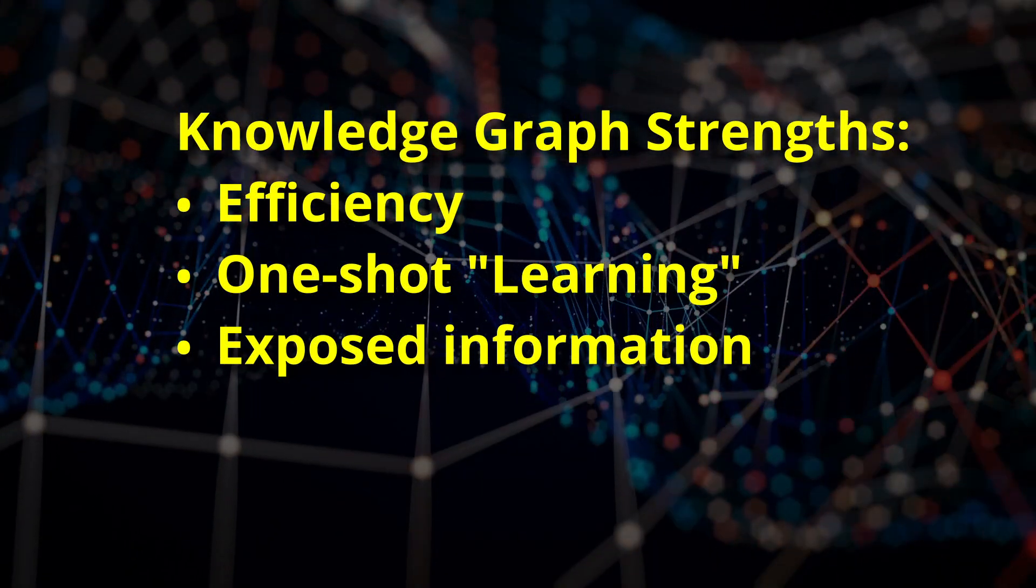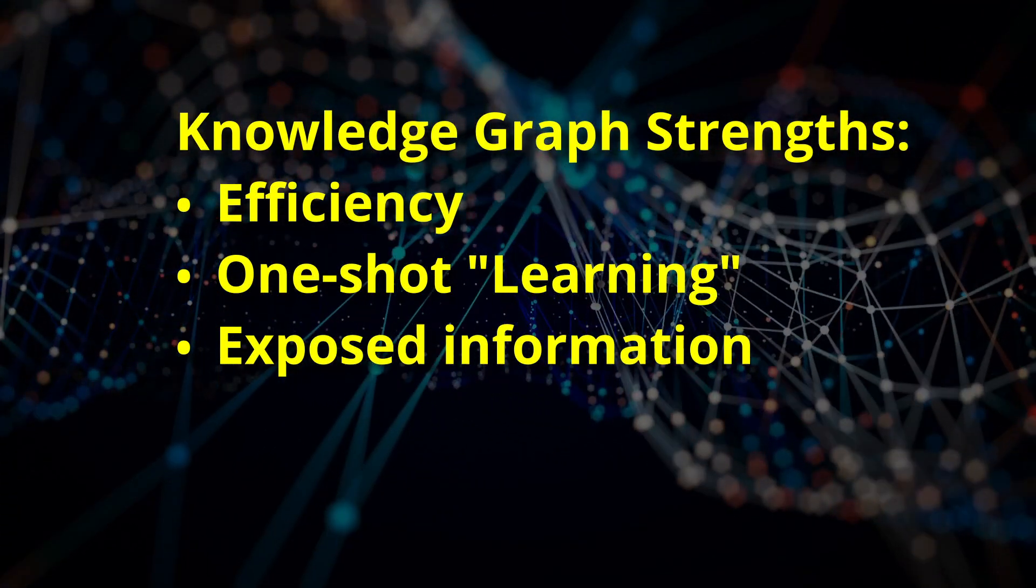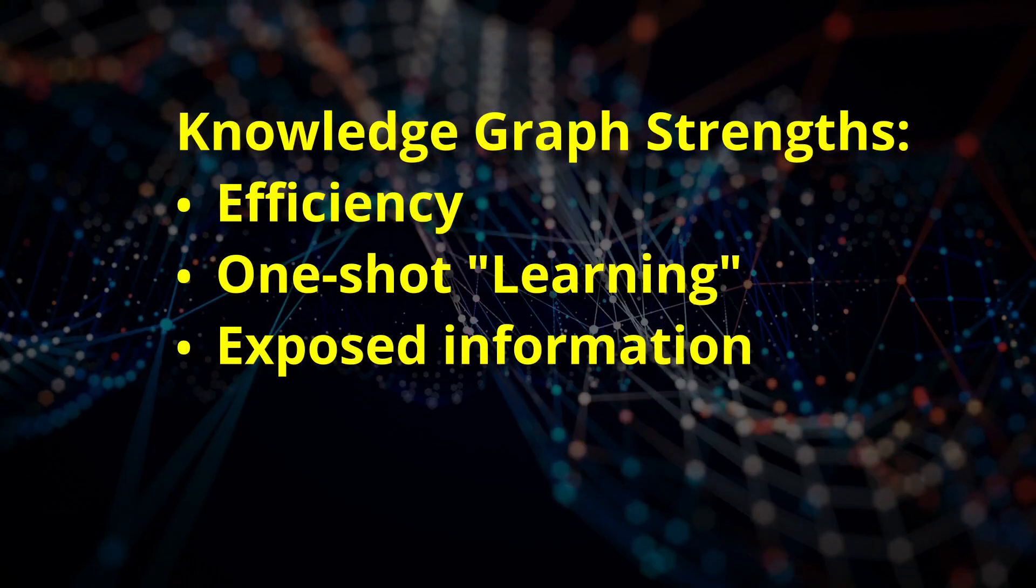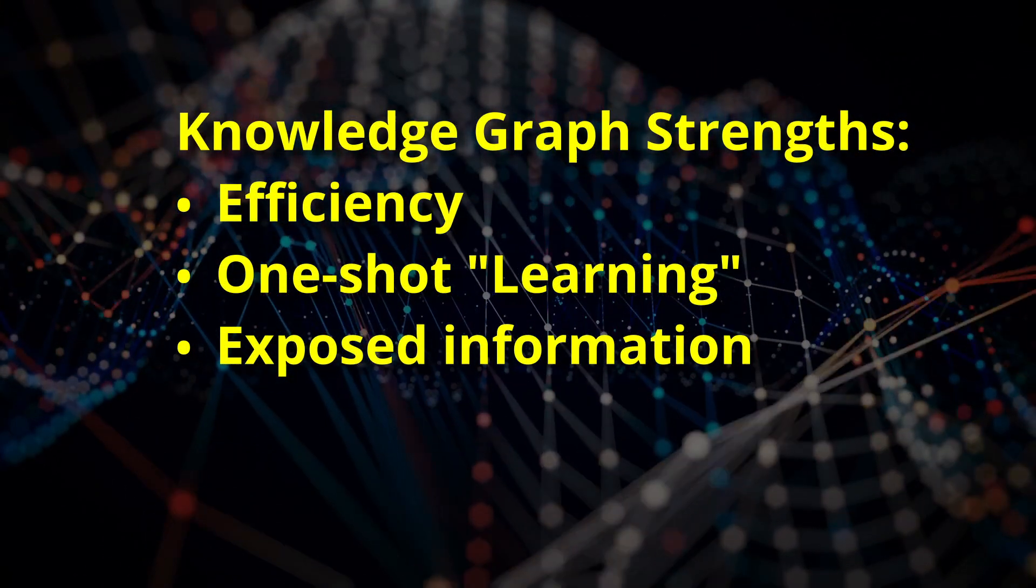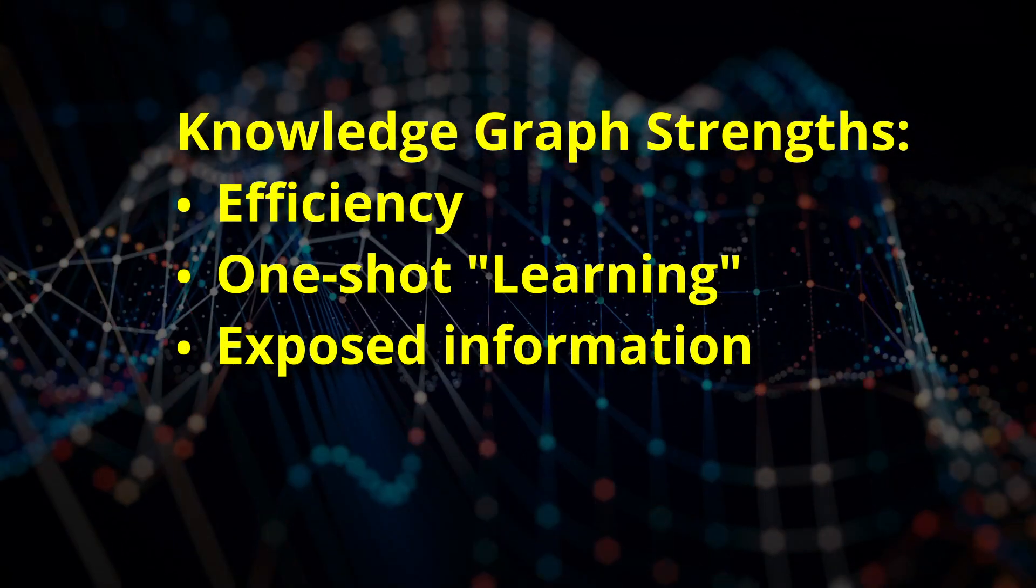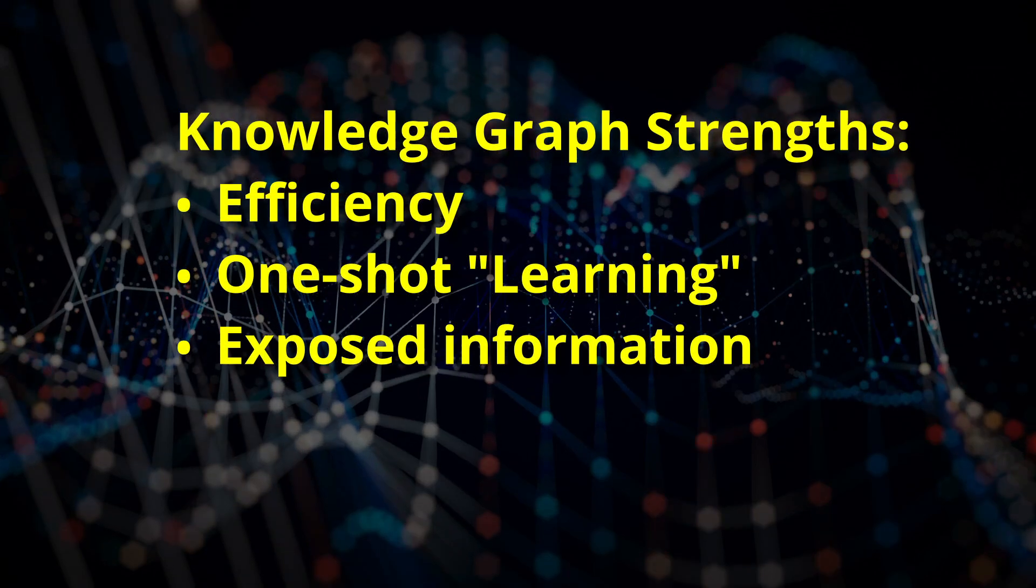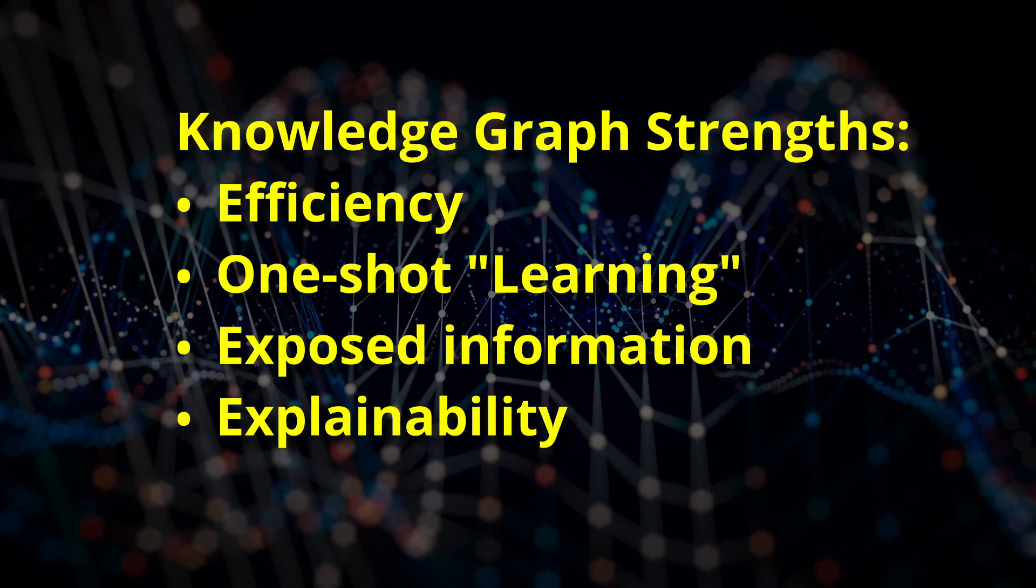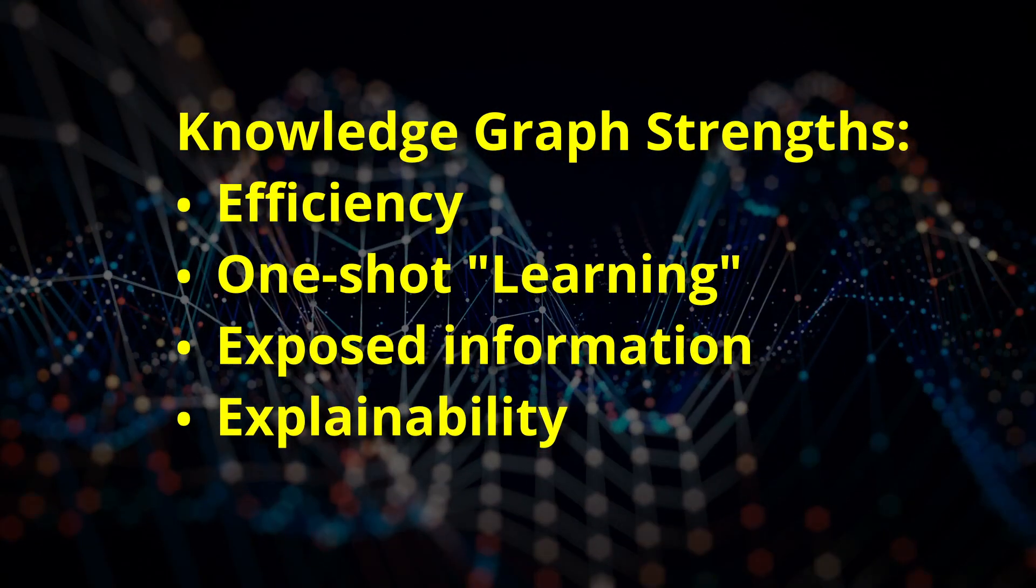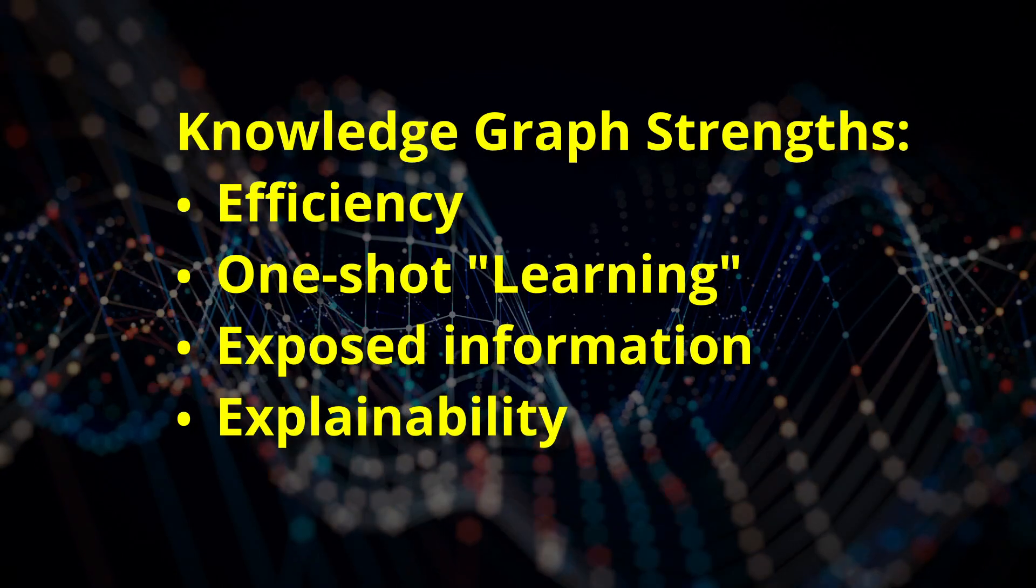Unlike traditional neural networks, where knowledge is hidden in synapse weights, Knowledge Graphs explicitly store relationships, making reasoning much easier and more transparent. Finally, the Knowledge Graph can always give the facts which led to any conclusion.